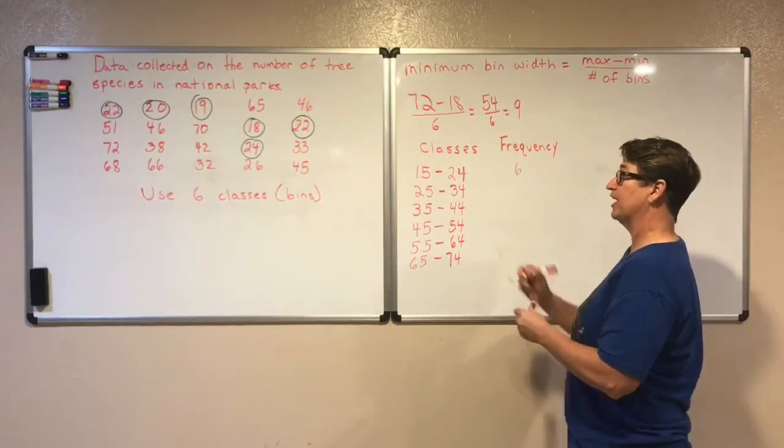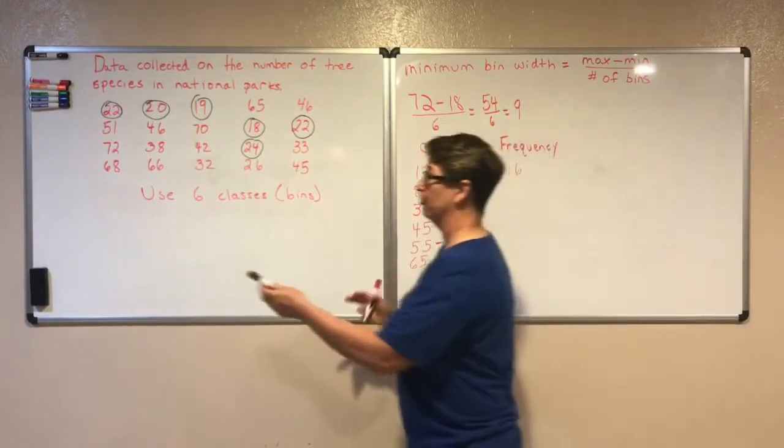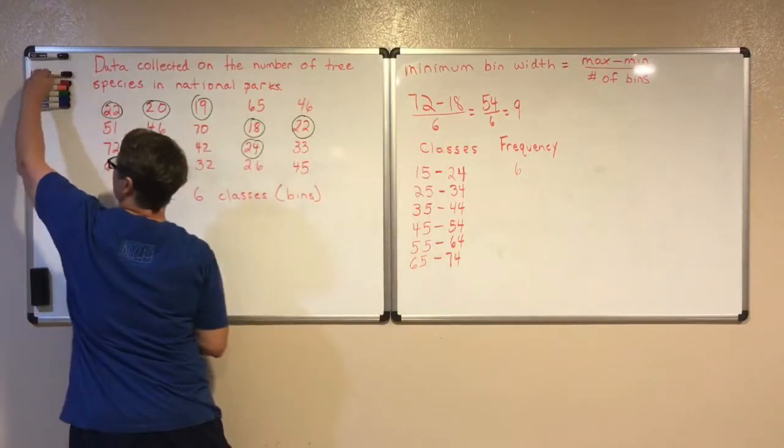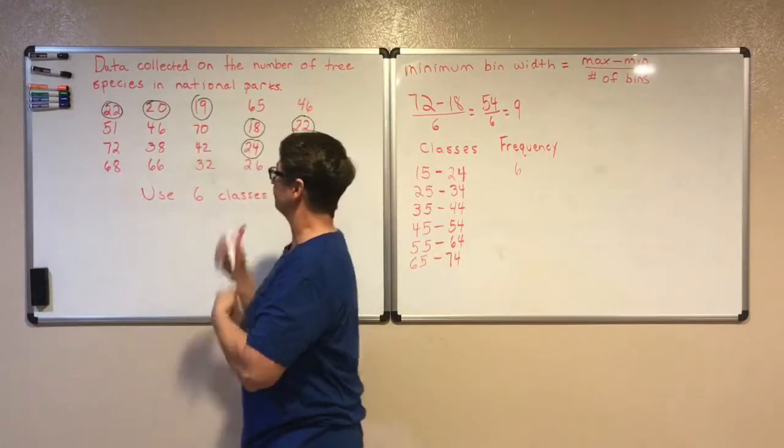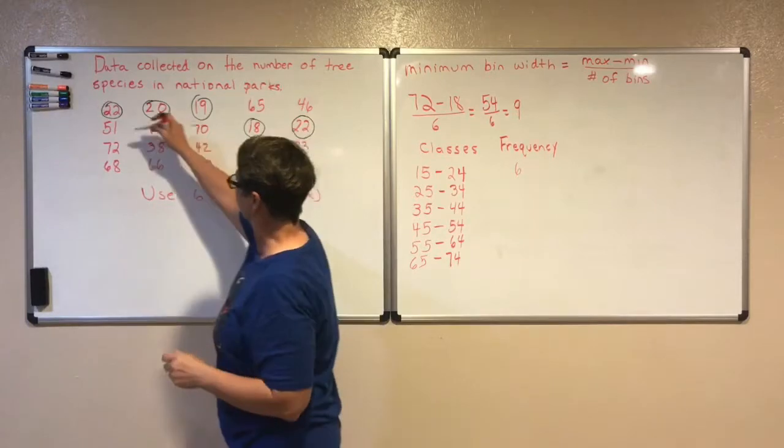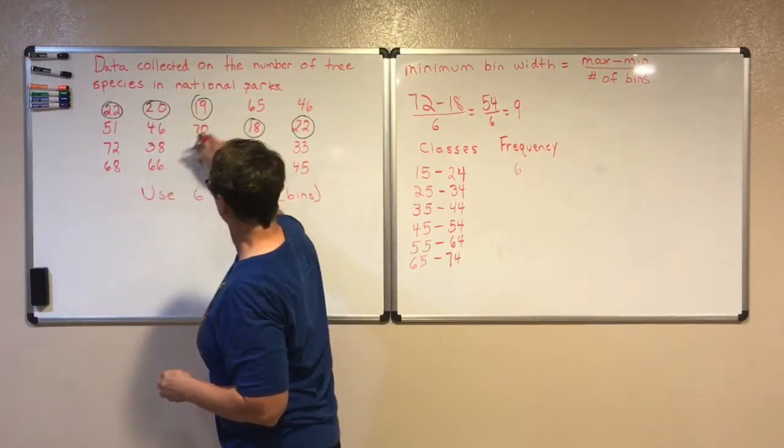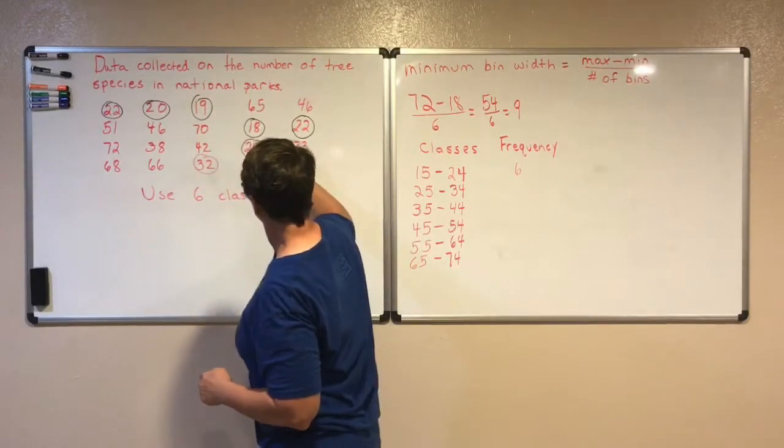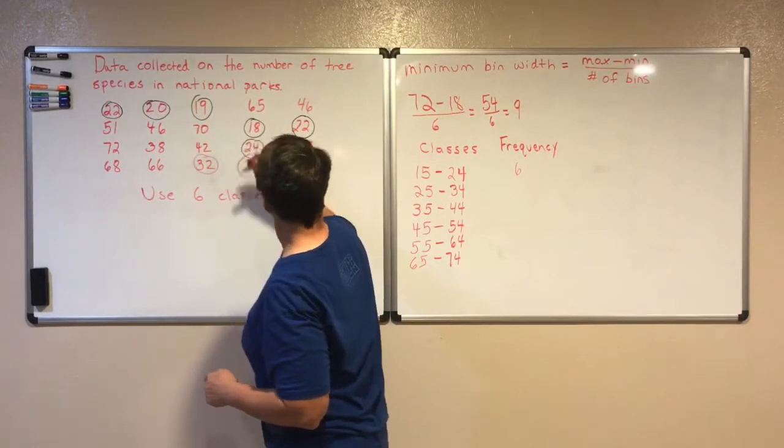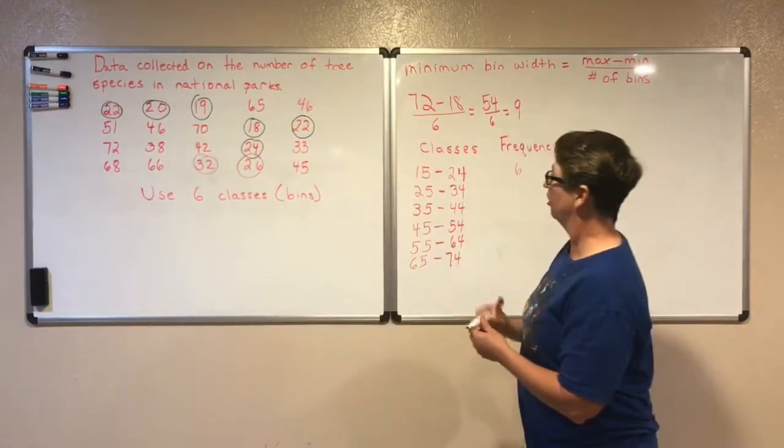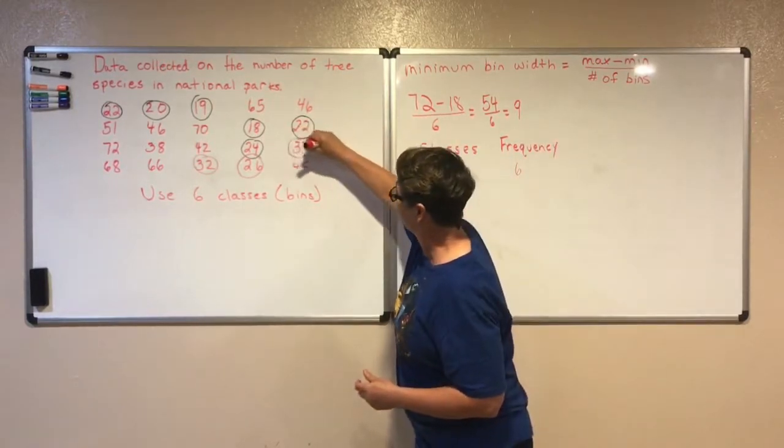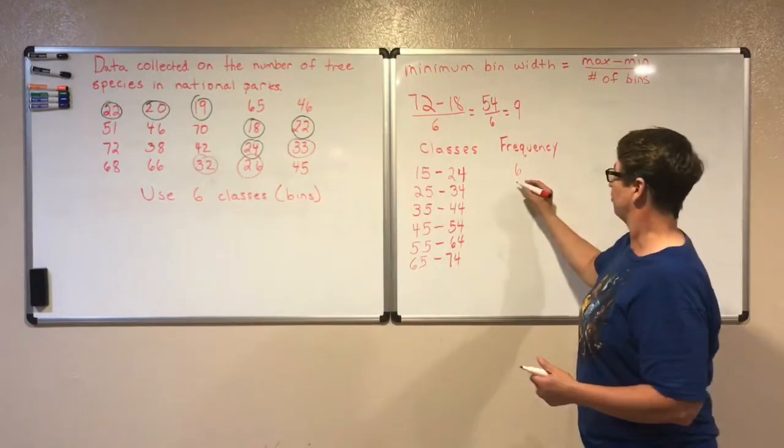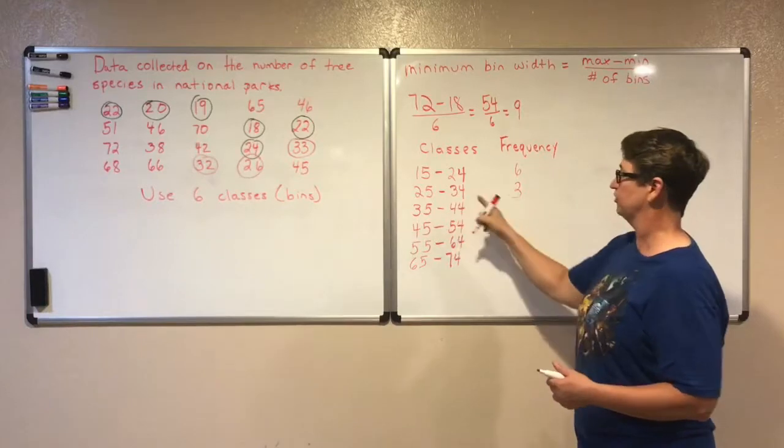Then I'm going to find all the data between 25 and 34. I'm going to use a different color just to make sure I get this correct. So 25 to 34. I have one, two, three. So there are three there between 25 and 34.